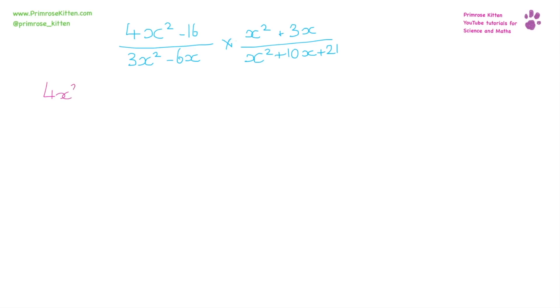So, 4x² - 16. Hopefully you should recognize this straight away as a difference of squares and the fact that we can take 4 out of everything. So if I divide everything by 4, I get x² - 4.